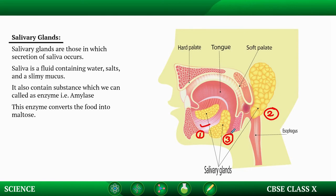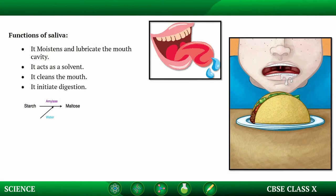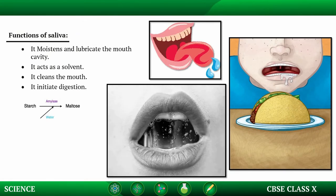Saliva moistens and lubricates the mouth so that one can swallow food easily. This moist mouth, with the help of the tongue, also helps in speaking — without moisture, the tongue cannot work and you would be unable to speak. Saliva also acts as a solvent which dissolves some parts of food to stimulate taste.